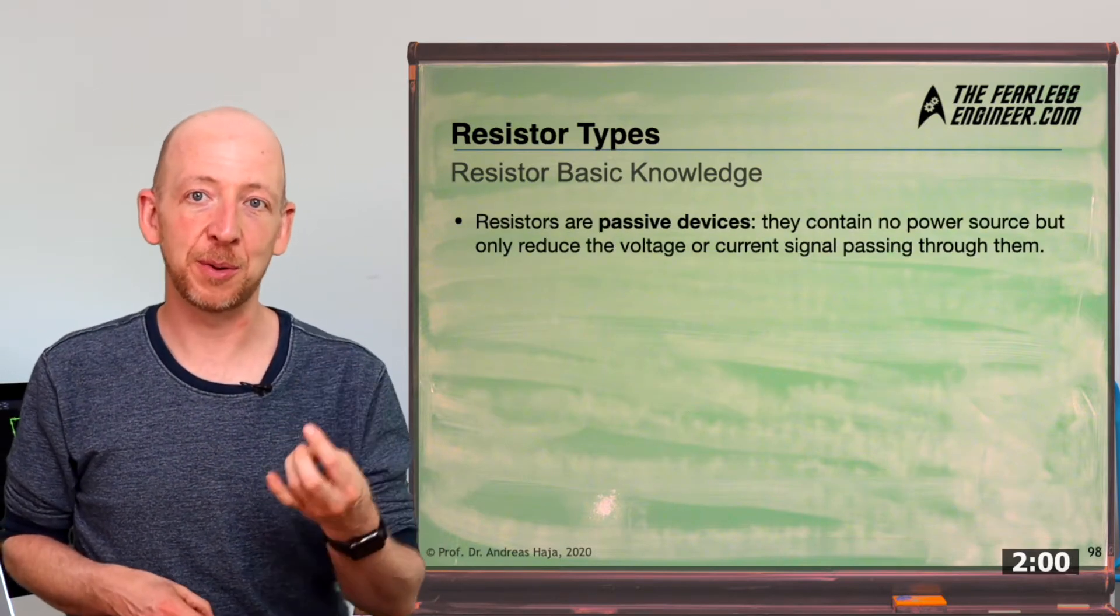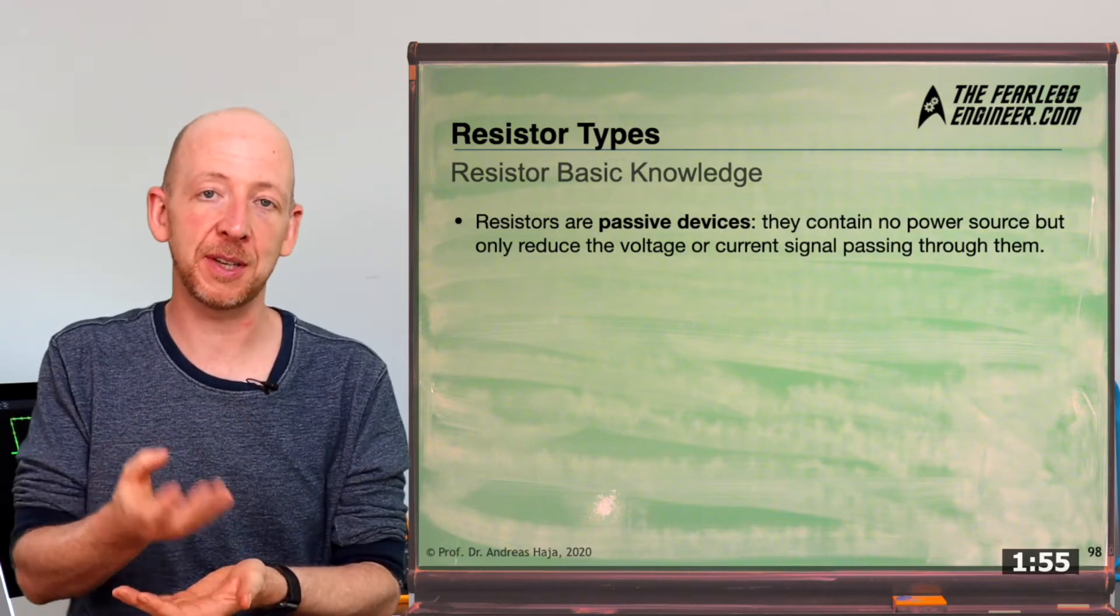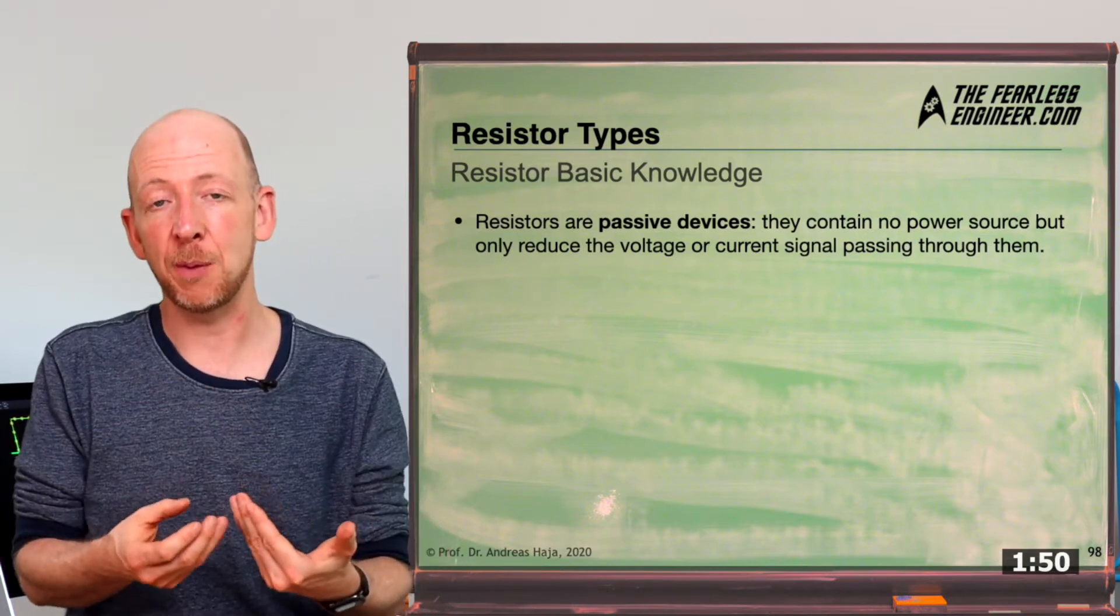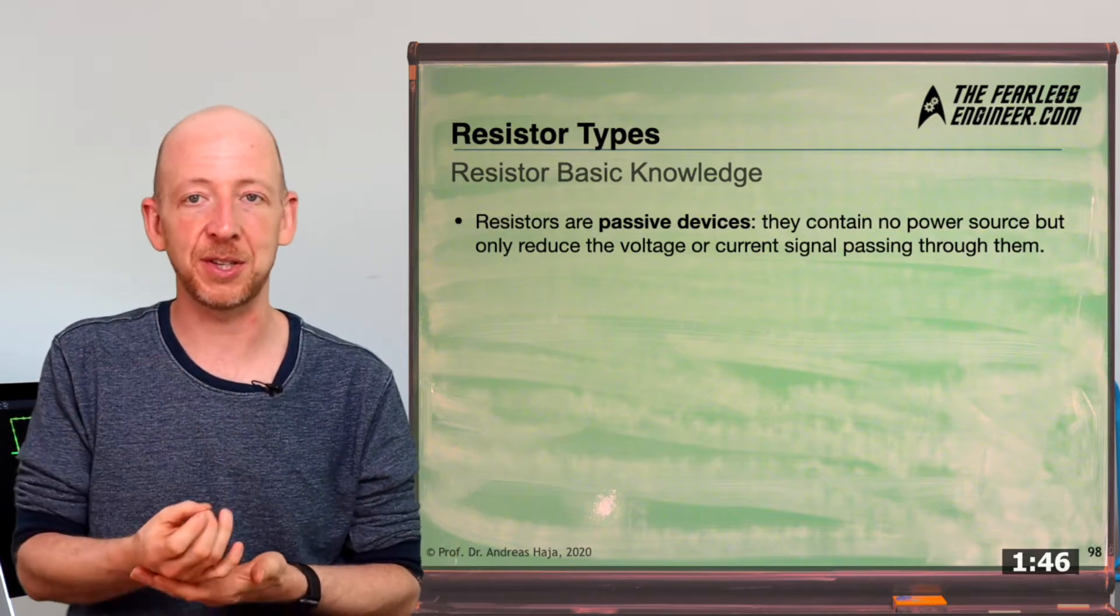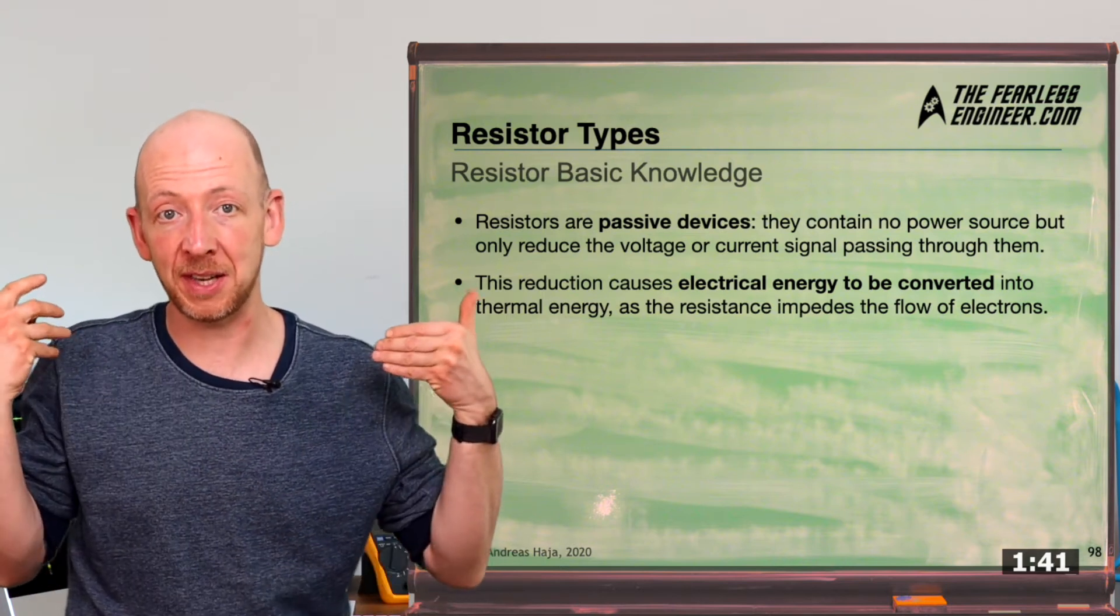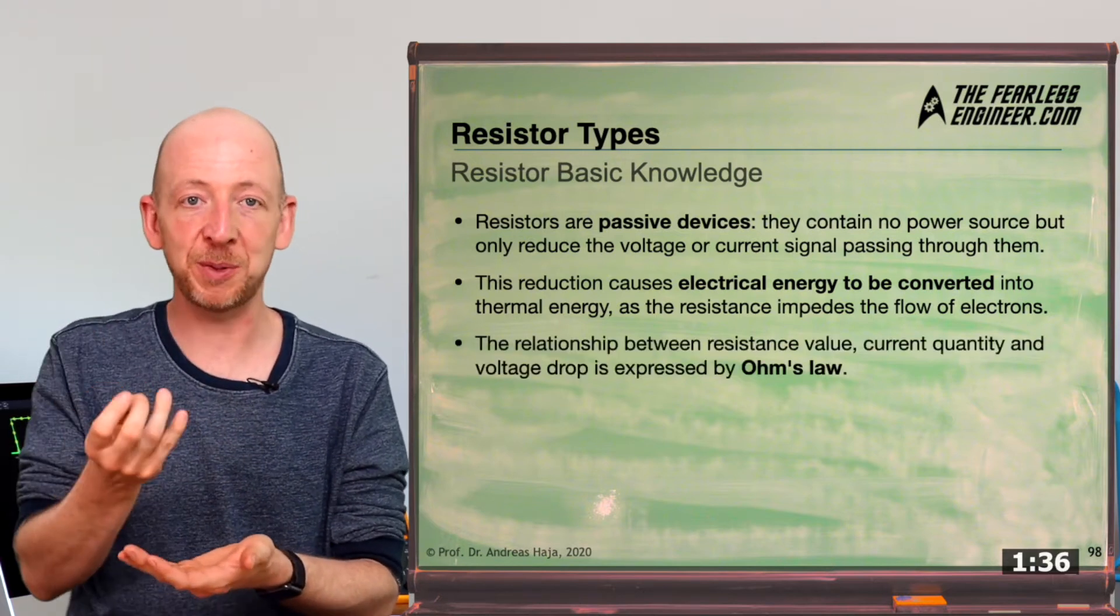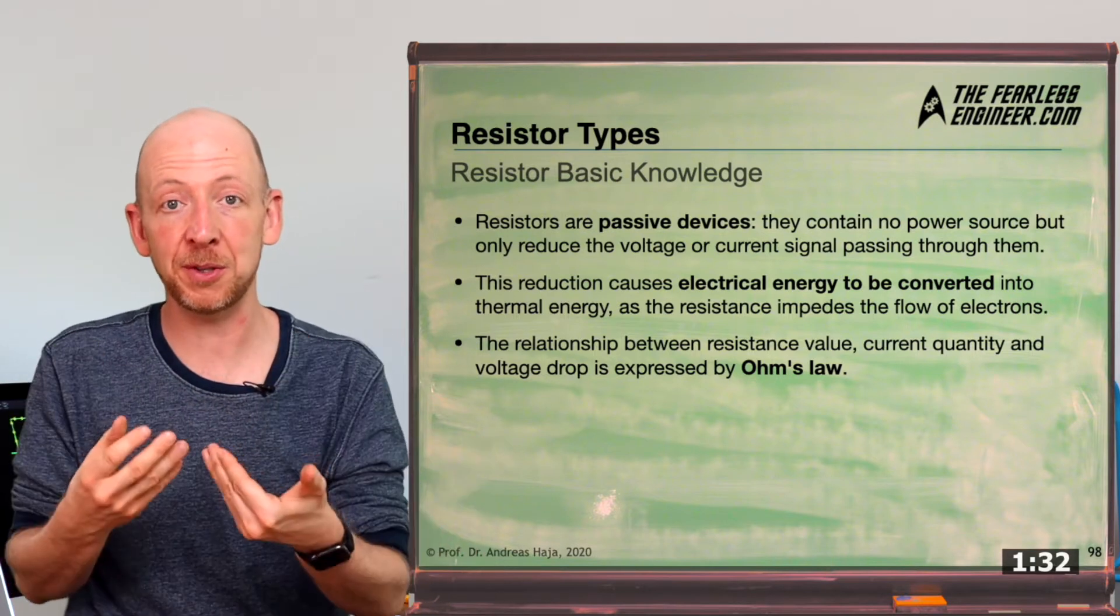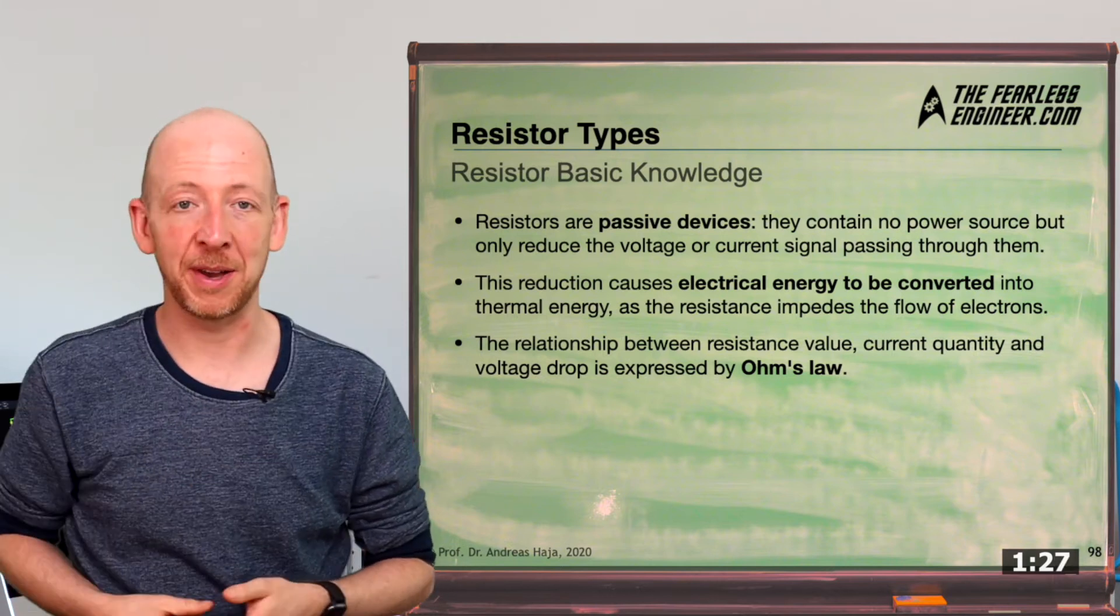Now, resistors are passive components. That means they hinder the movement of charge carriers by their structure and thereby reduce their kinetic energy. And the voltage drop across a resistor serves us as a measure of how much kinetic energy is converted inside of it into heat energy. And obviously, the relation between the value of a resistor, between the amount of current flowing through it and the voltage drop is described by Ohm's law.